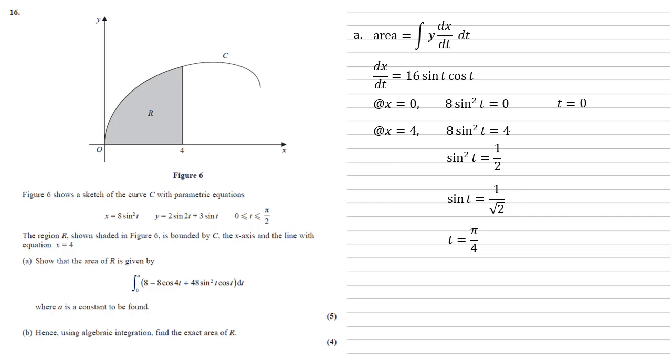We now put our y and dx by dt into our formula. The area equals the integral between 0 and pi over 4 of 2 sine 2t plus 3 sine t, that's our y, times by 16 sine t cos t, all with respect to t.